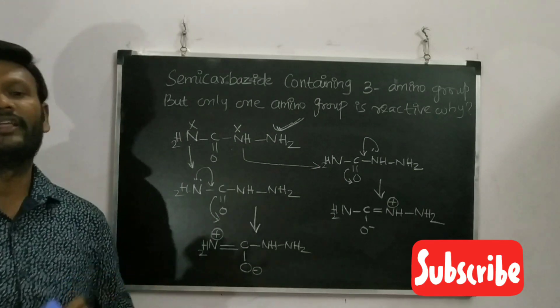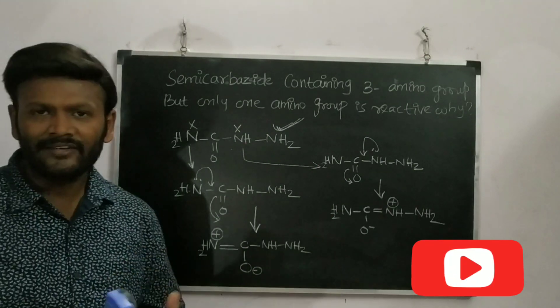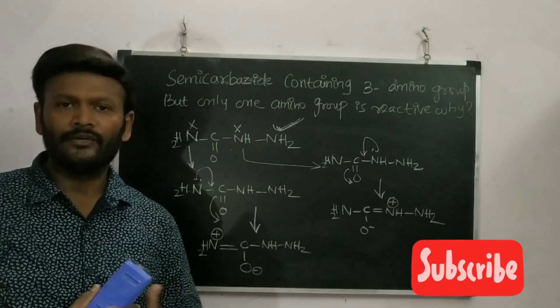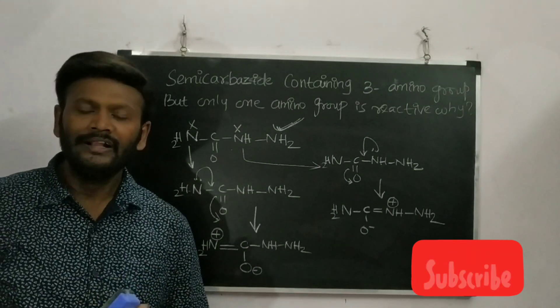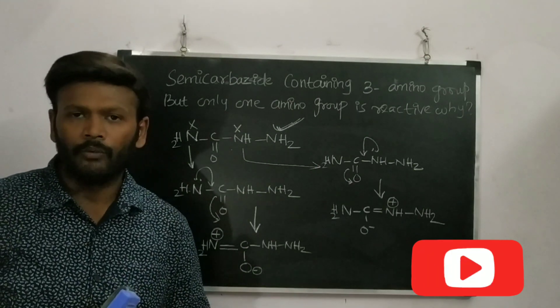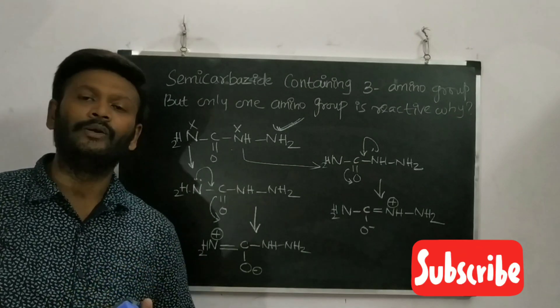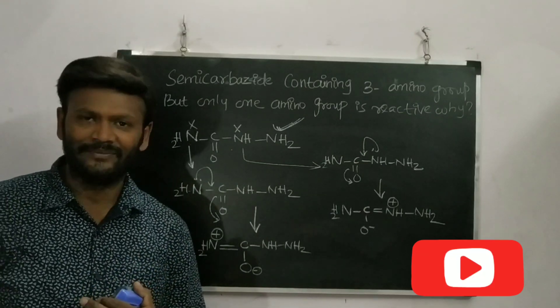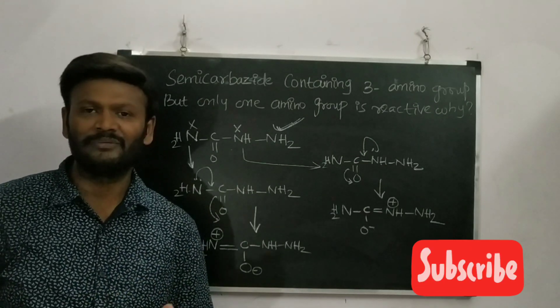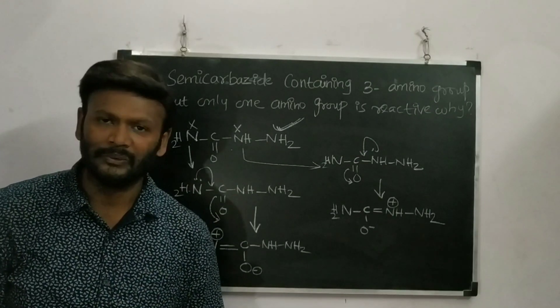So, semicarbazide contains three amino groups — one, two, three — out of which only one is reactive and two are not reactive because of resonance stabilization. I hope you understood very well. Thank you so much for watching. Please share this with others to spread the benefit, and don't forget to subscribe to this channel.